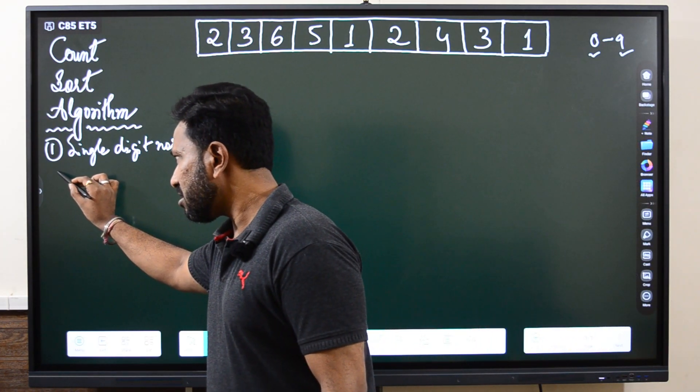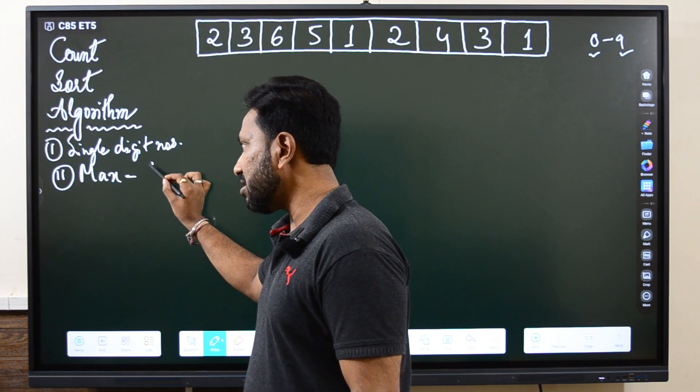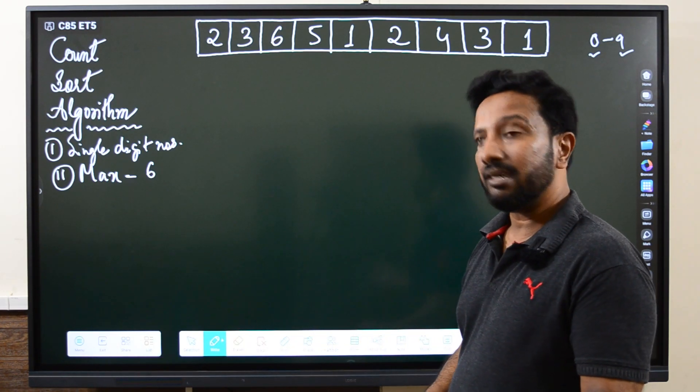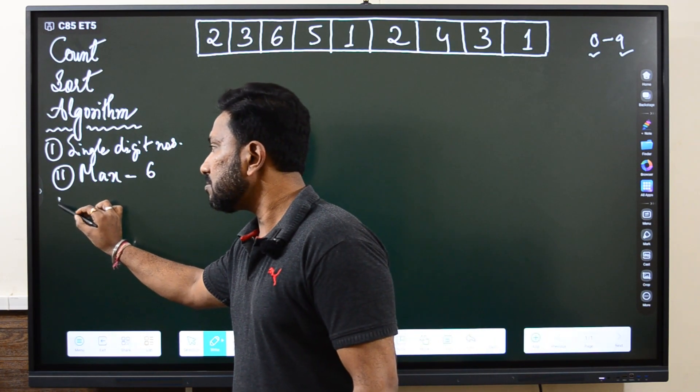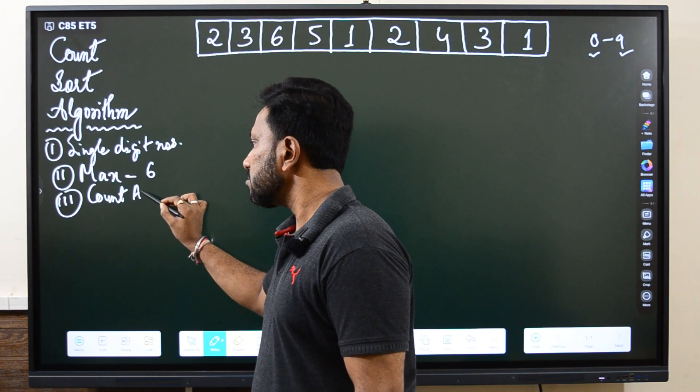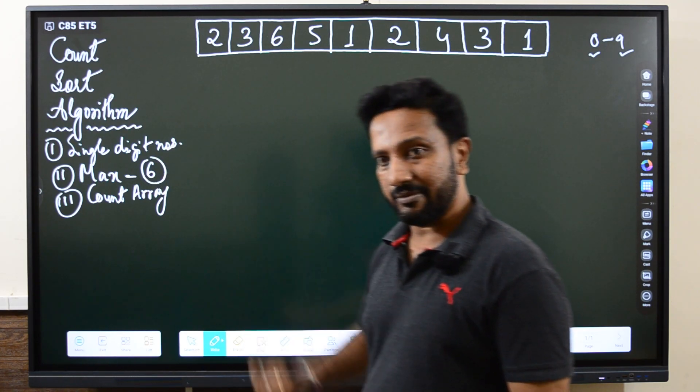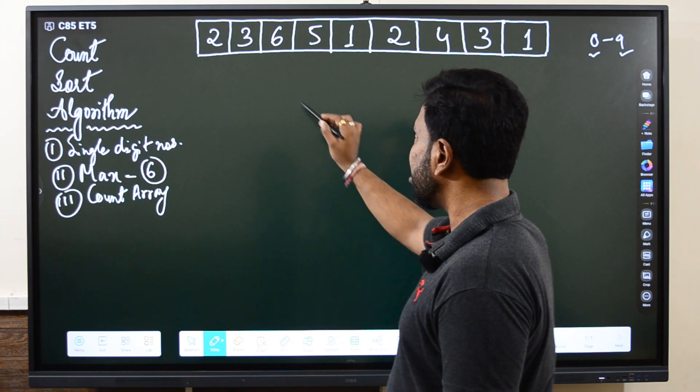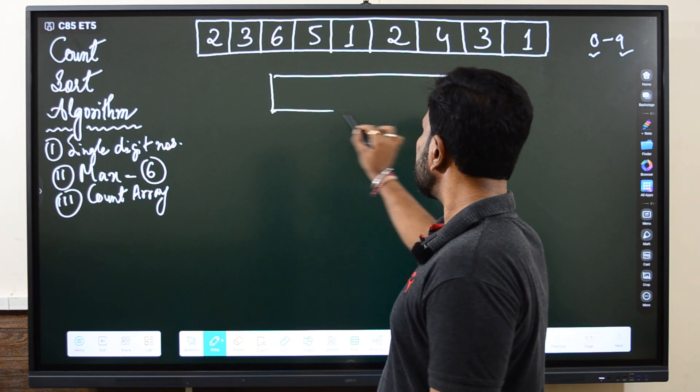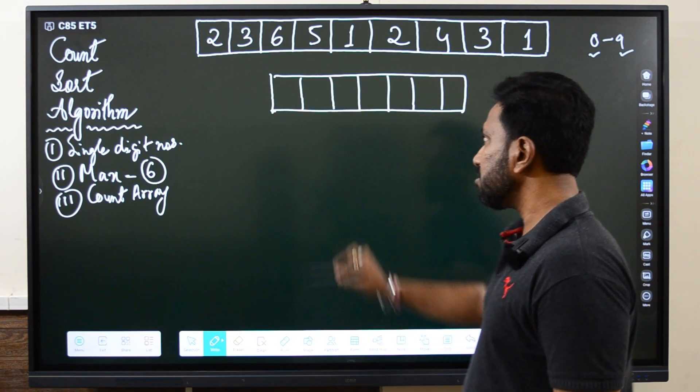The first step is to find the max. In our example it is 6. Based on that we have to create a count array. The count array index will go from 0 to this max value. So let us create the count array now: 0, 1, 2, 3, 4, 5 and 6.